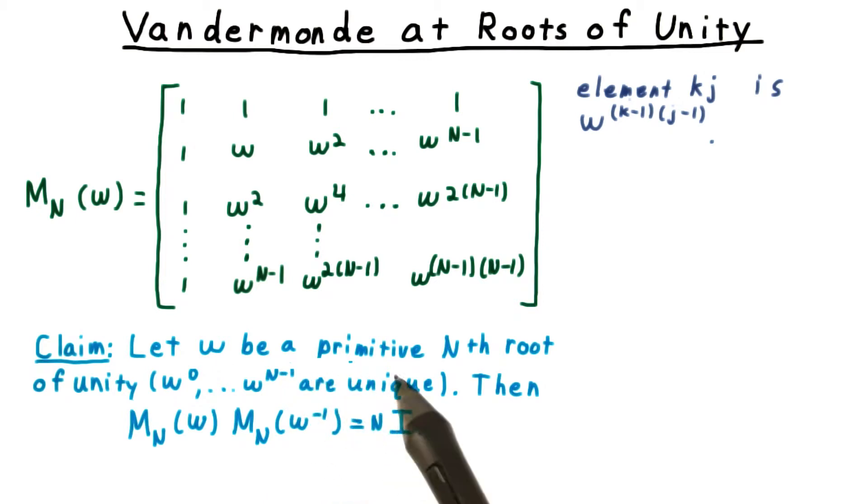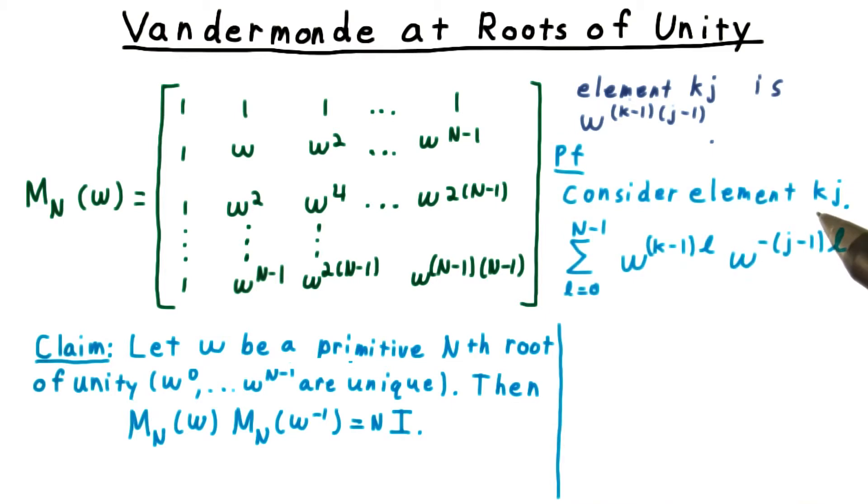We'll let omega be a primitive n-th root of unity. This means that all of its powers, zero through n minus one, are unique. Well then, the Vandermonde matrix parameterized by omega as defined here times the one parameterized by omega inverse is equal to n times the identity matrix.